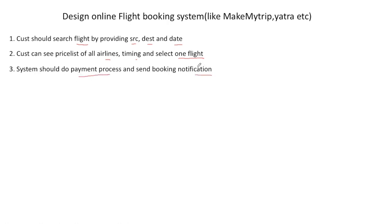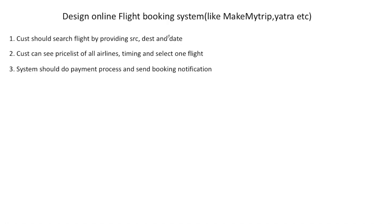The third requirement is that the system should handle the payment process and send notifications through SMS or email. Note that in any kind of booking system — whether it's RedBus for bus booking or BookMyShow for movie booking — the payment module and notification module will always be common, so you always need to design these two modules.